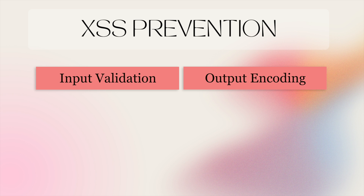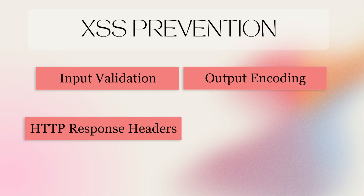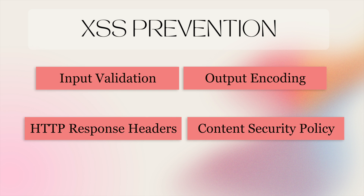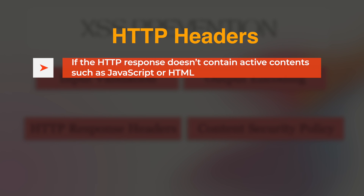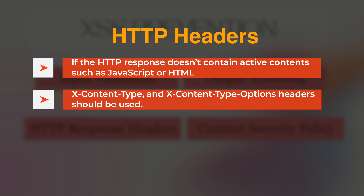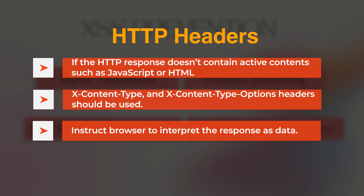Further to these defensive mechanisms, there are other options that can help reduce the risk of XSS attacks: using appropriate HTTP response headers and enabling Content Security Policy. If the HTTP response does not contain active contents such as JavaScript or HTML, then the X-Content-Type and X-Content-Type-Options headers should be used to instruct the web browser to interpret the response as data. So if an attacker manages to inject malicious JavaScript code into the application, it won't be executed in the user's web browser, reducing the risk of XSS attacks.